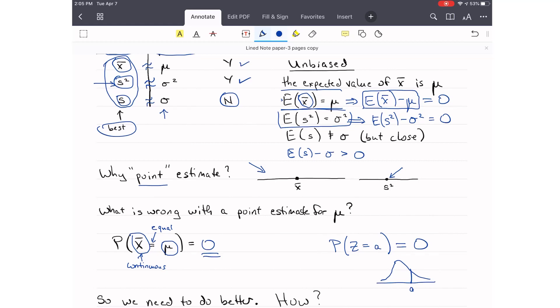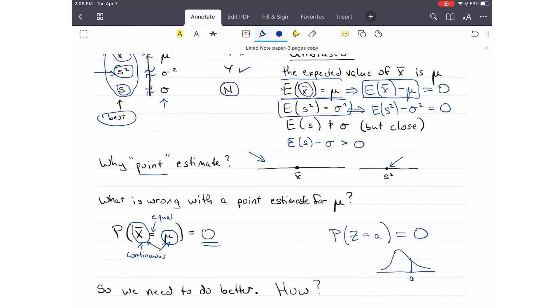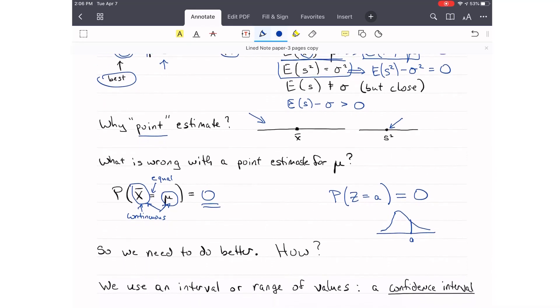But the thing is, x-bar is almost never equal to mu. We can't really ever say that x-bar is equal to mu with any probability. So we need to do better. How are we going to do better?